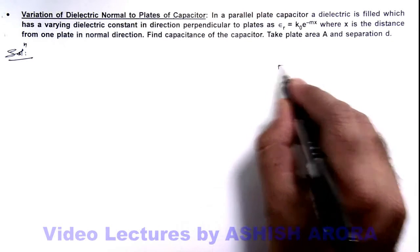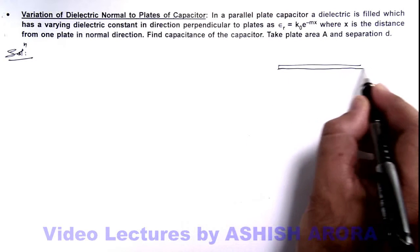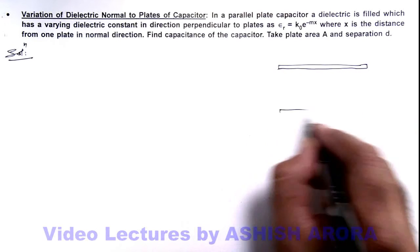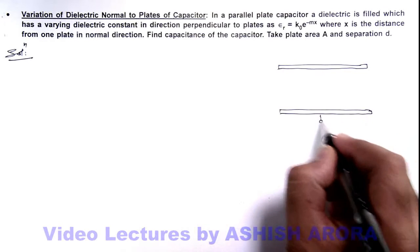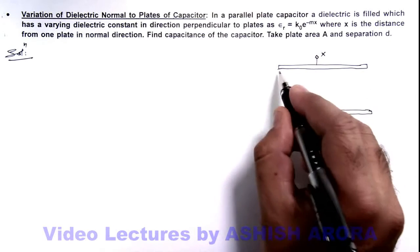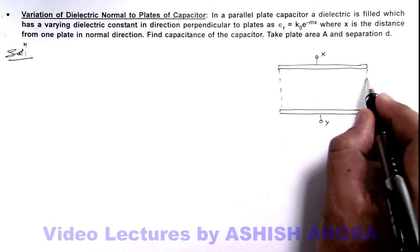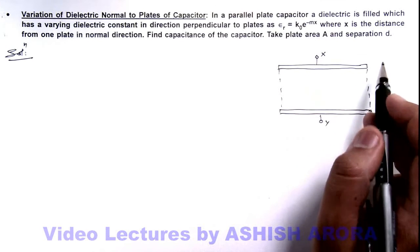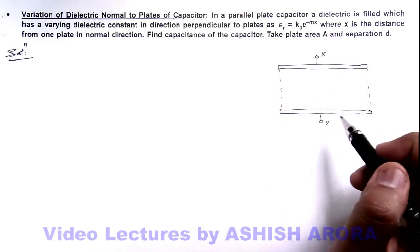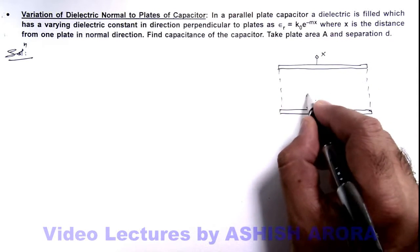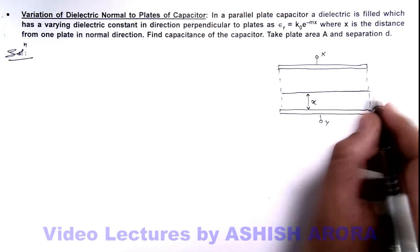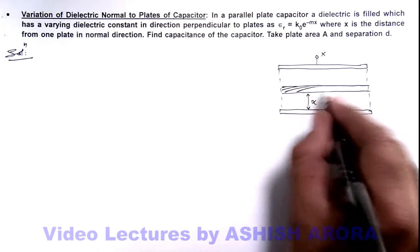If we draw the capacitor, say these are the two plates of the capacitor, where we are required to find the capacitance between the terminals x and y. It is filled with the dielectric of which the dielectric constant is varying with the distance. So if we take a distance x from one plate and we consider an elemental section of width dx.